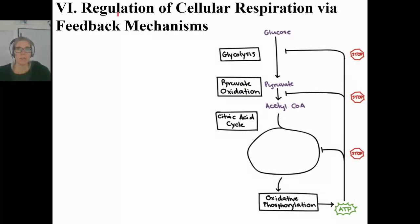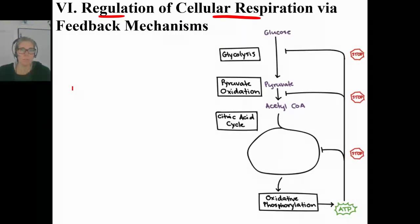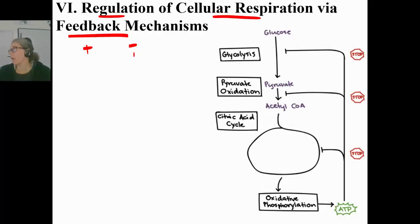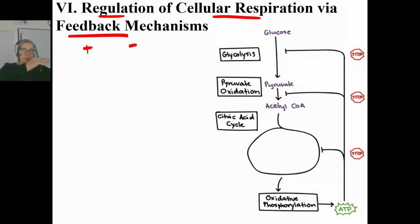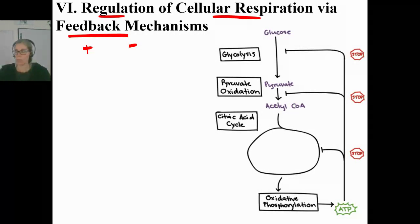Welcome to AP Biology. Today I want to talk to you about the regulation of cellular respiration and some feedback mechanisms. For feedback mechanisms there's positive feedback and negative feedback. A lot of times students think that positive is good and negative is bad, and that is absolutely not true. Most of our feedback is negative. It means changes away from your set point cause changes back toward the set point.